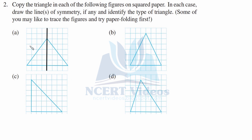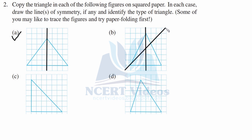Part B is an equilateral triangle — all sides measure six units. The equilateral triangle has three lines of symmetry. Each line passes from one vertex and goes to the midpoint of the opposite side. You need to remember this: an equilateral triangle always has three lines of symmetry.